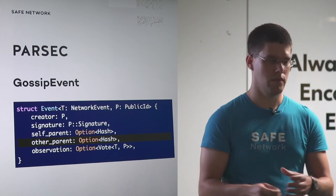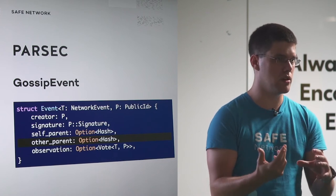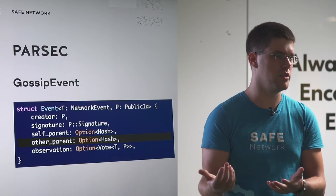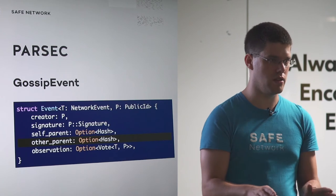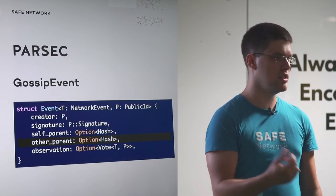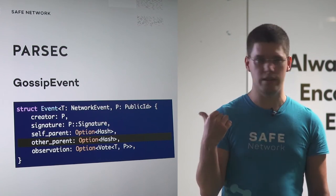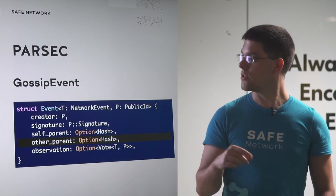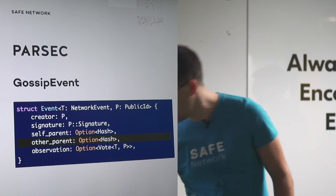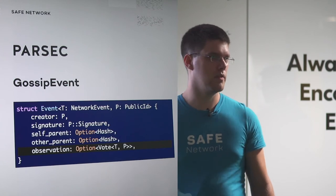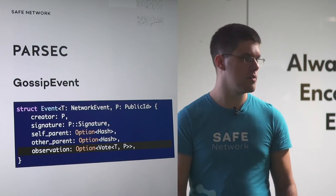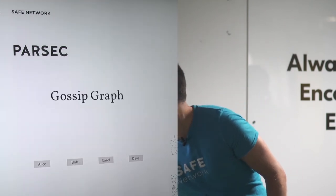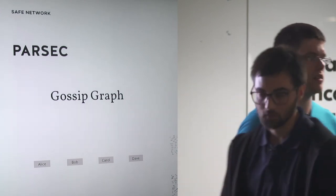If a node created an event as a result of observing something happening in the network, it usually won't have an other parent — there's no reasonable choice for it. But we also create new gossip events as a result of receiving gossip from somebody else. At that point, we assign the other parent, which is the latest event created by our gossip partner that we are receiving from them. This way, we create a sort of history in the graph. The last part of a gossip event is something called an observation, which is the payload. It can contain a vote, or in general any information we want to get consensus on. Now we'll talk more about what the gossip graph looks like.